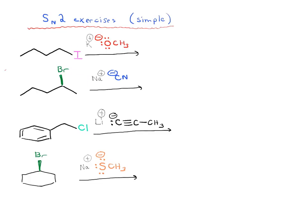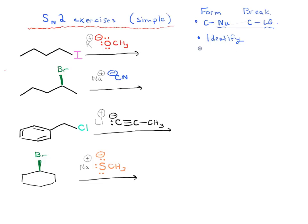Let's have a look at this first reaction. Before we go through this, remember that in all nucleophilic substitution reactions, you're always forming and breaking one bond. You're forming a bond between carbon and the nucleophile, and you're breaking a bond between carbon and your leaving group. You have to identify your nucleophile and your leaving group. The SN2 reaction goes with inversion of configuration — this is only really important in situations where we have a stereocenter.